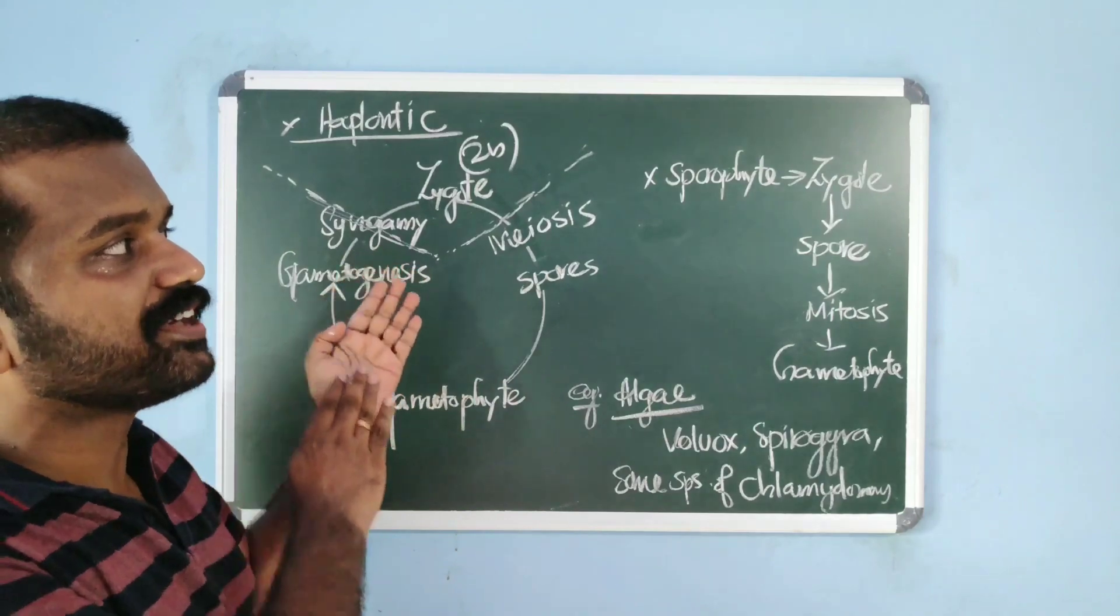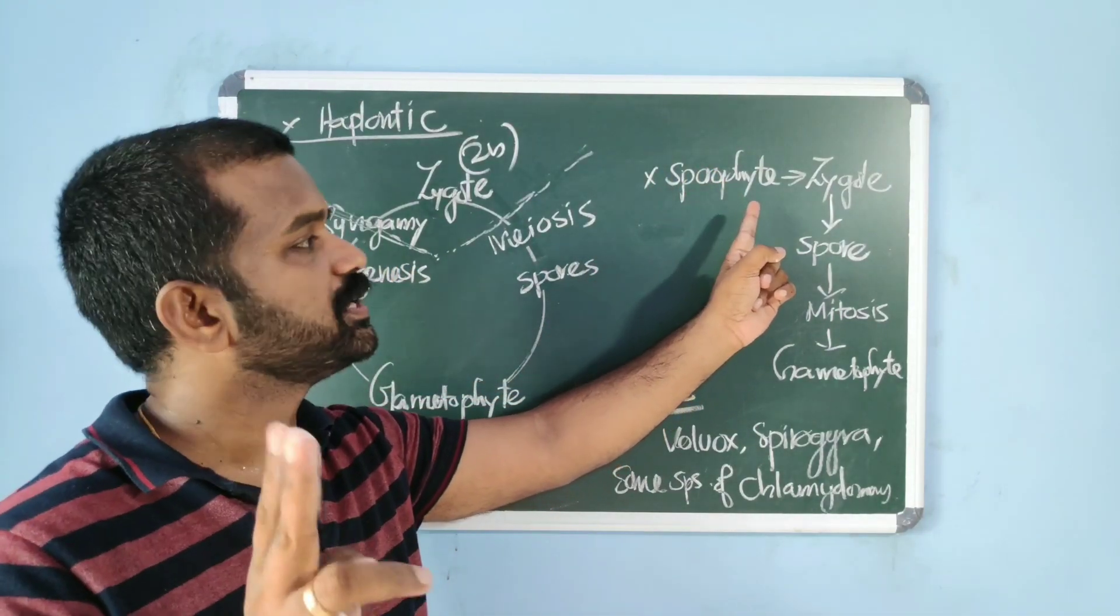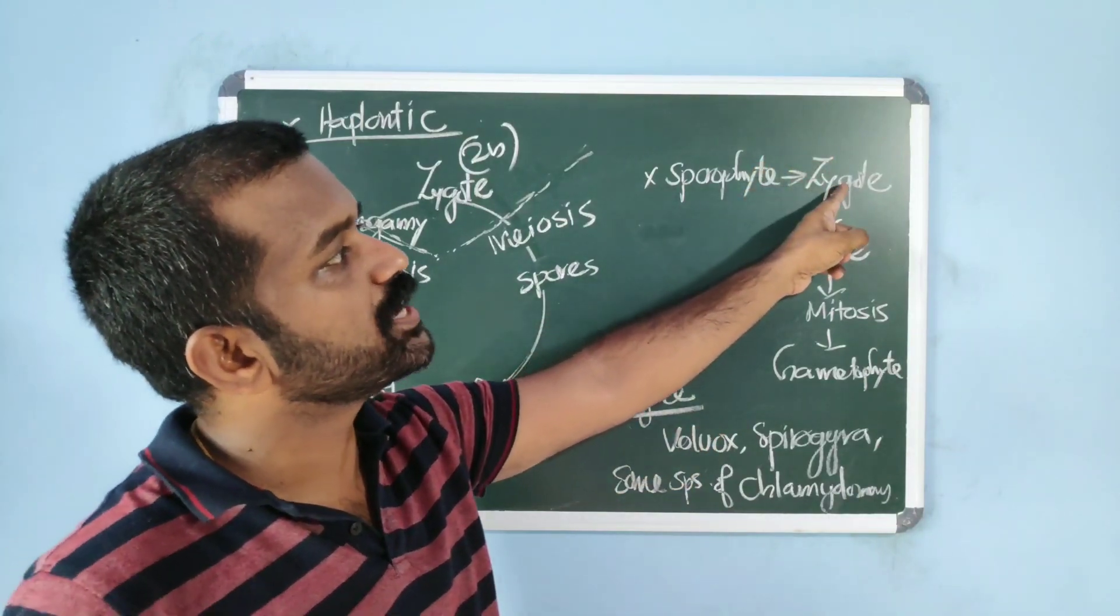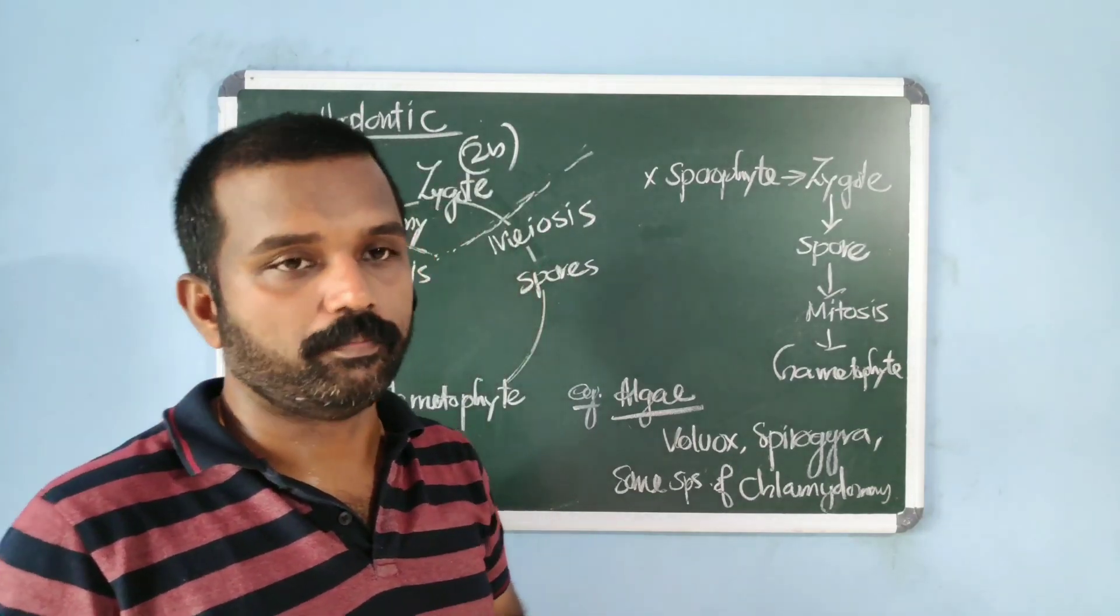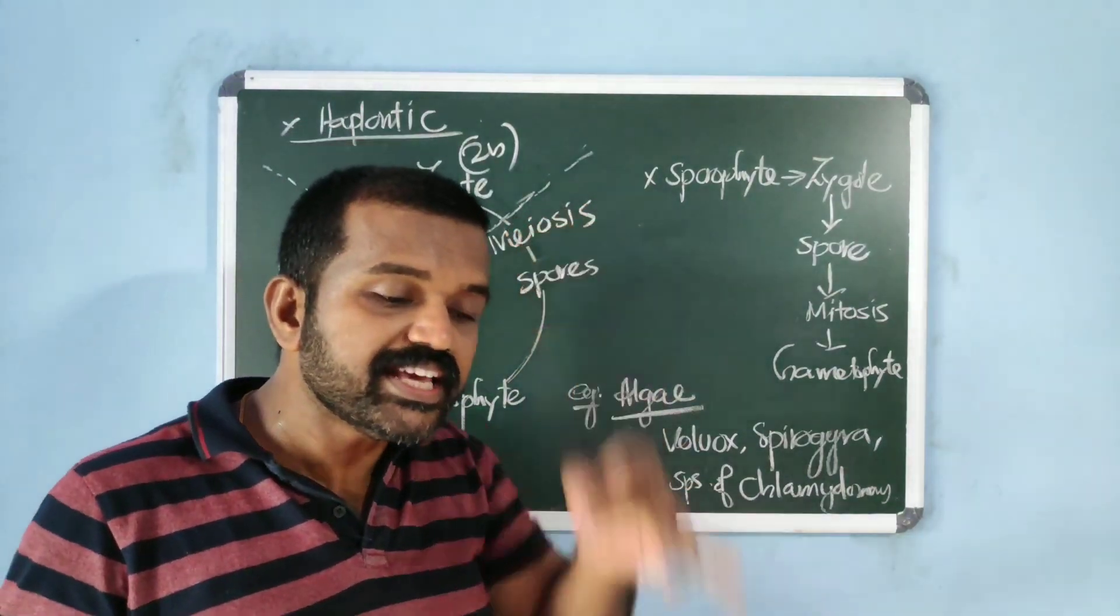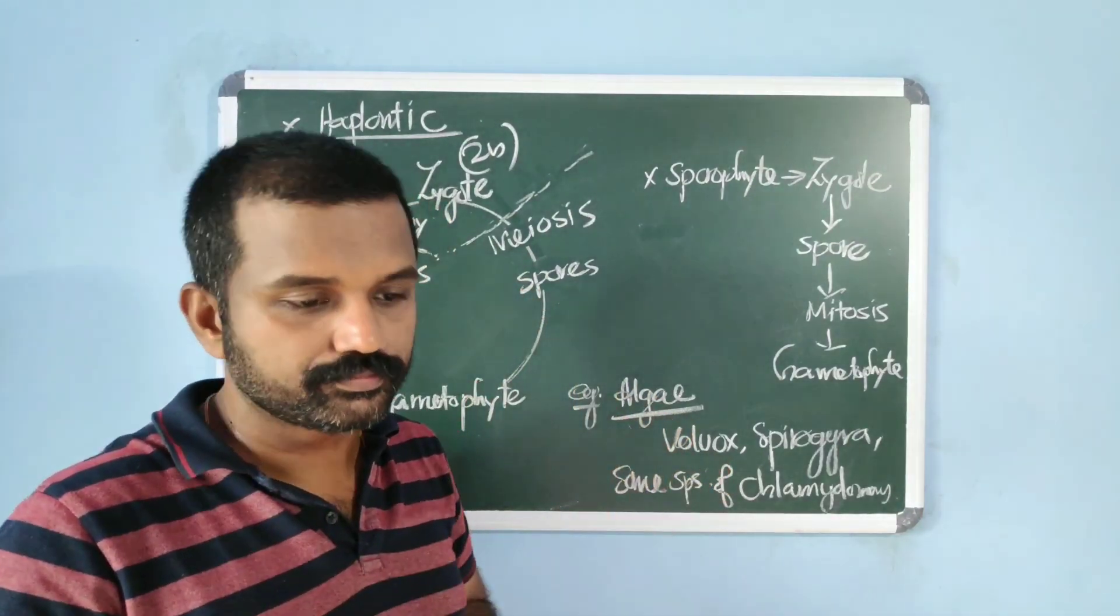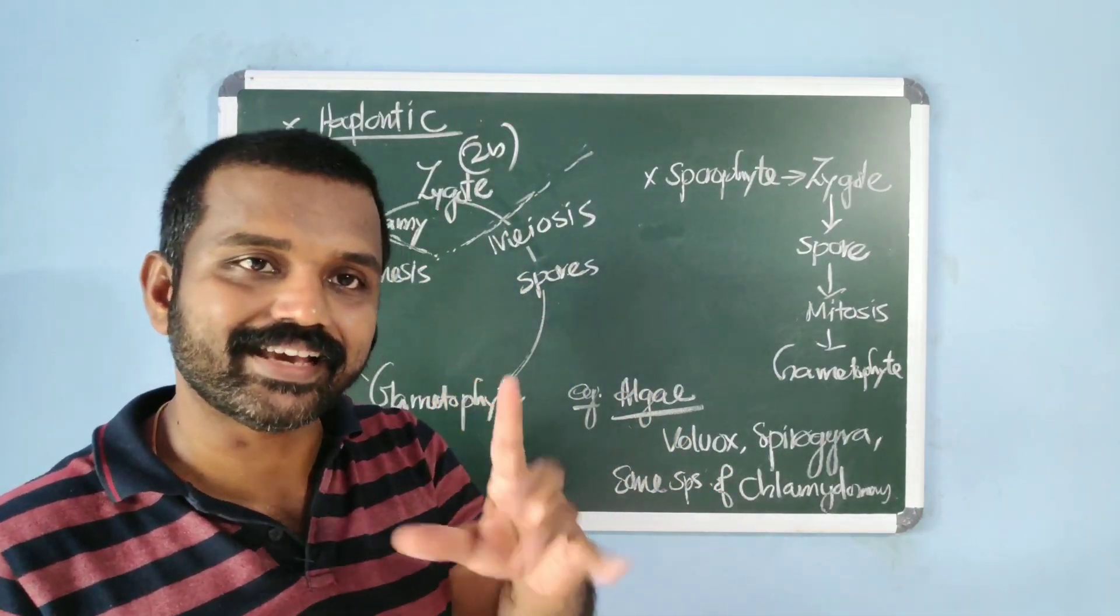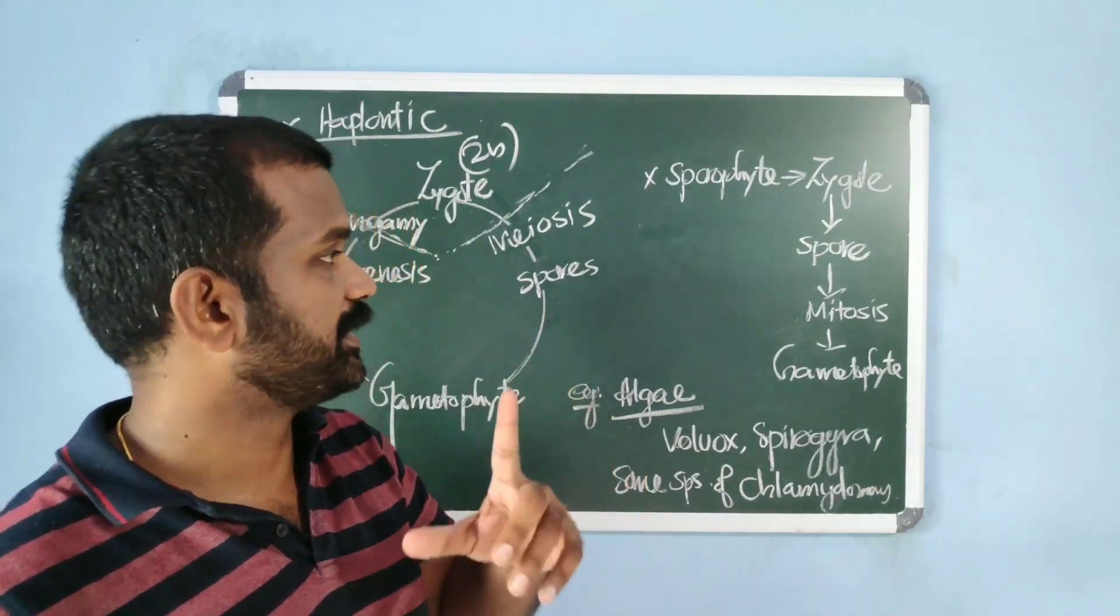In this life cycle, the diploid sporophyte is represented by the unicellular zygote. We can say that in haplontic, sporophyte is least developed or it's represented by zygote only. In algae, that is the specialty of haplontic life cycle.